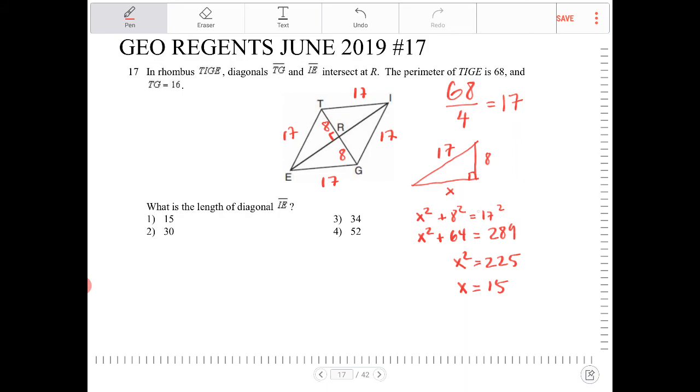So 15 is half of the diagonal. So don't be fooled by that. There is an answer choice there that says 15. We're looking for IE. IE is equal to 2 times RE. So therefore, this is going to be 30. So that's answer choice 2.